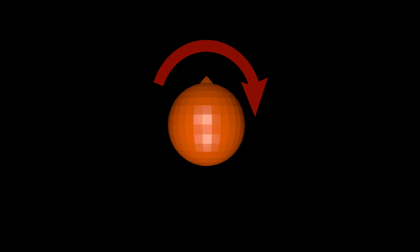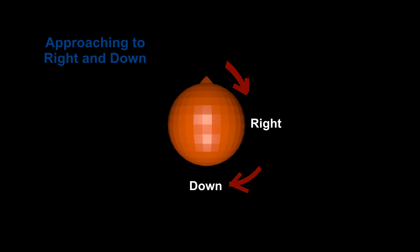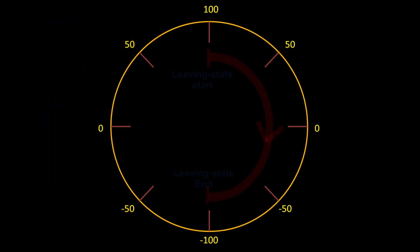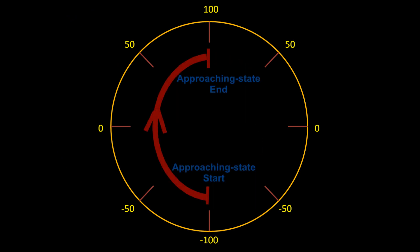Let us rotate the electron by 90 degrees clockwise and observe the amplitude of all four states at each rotation step. When we rotate the electron, the top portion is leaving the spin left and spin up states and approaching the spin right and spin down states. Leaving by 90 degrees means subtracting 50% amplitude, and approaching by 90 degrees means adding 50% amplitude. Leaving continues until negative 100%, then switches to approaching, and approaching continues until positive 100%, then switches to leaving.